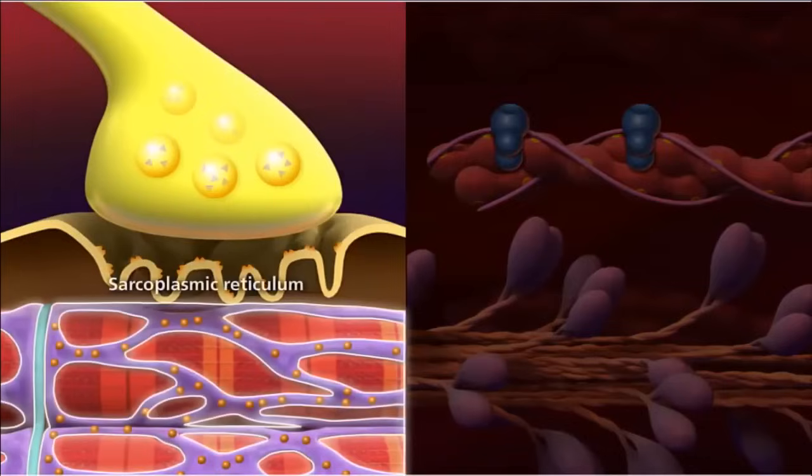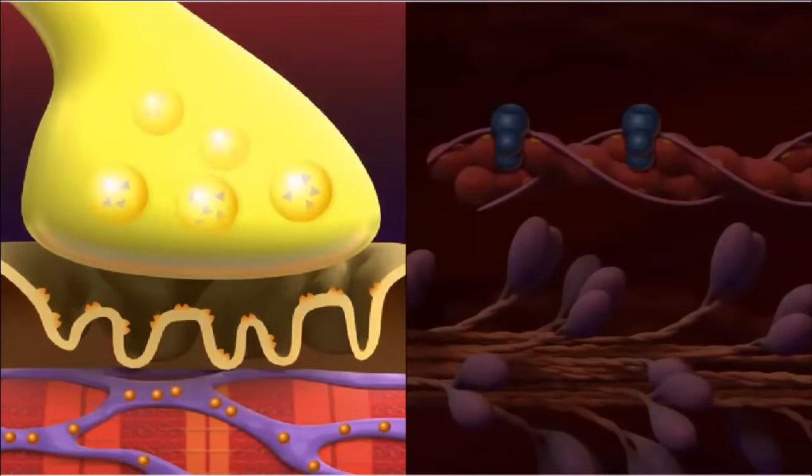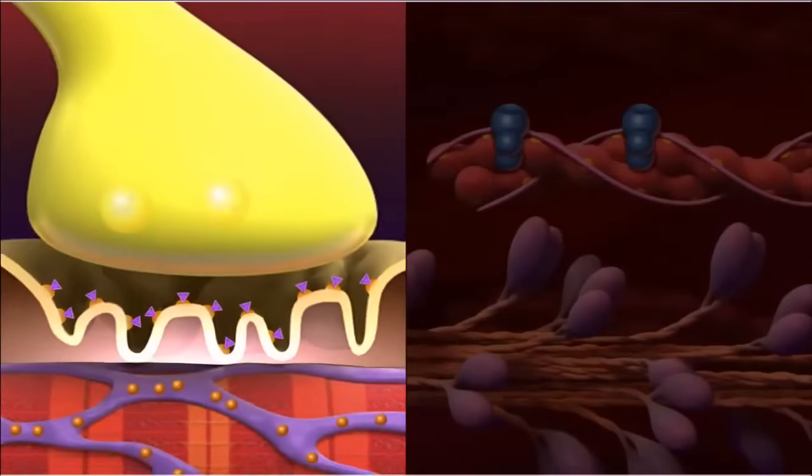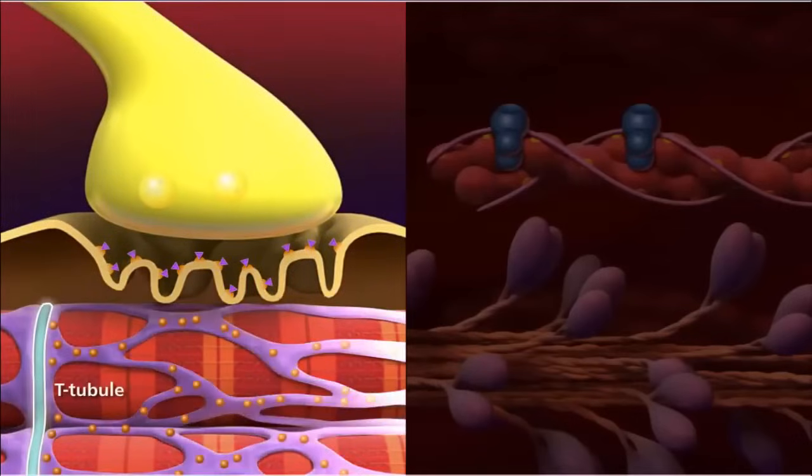Calcium ions are stored in the sarcoplasmic reticulum and are released in response to signals from the nervous system to contract. Neurotransmitter molecules are released from a neuron and bind to receptors, which depolarizes the membrane of the muscle fiber. The electrical impulse travels down the T-tubules and opens calcium stores.